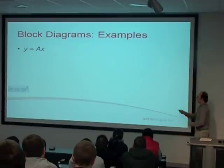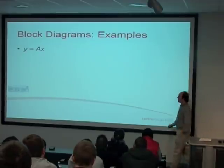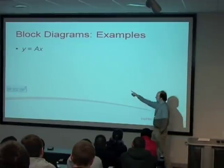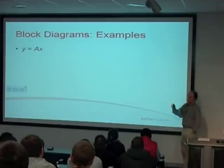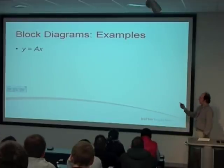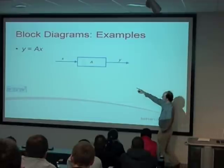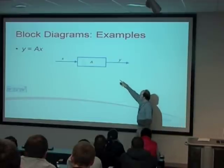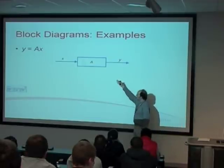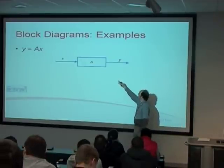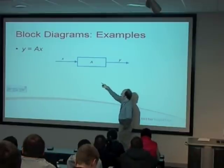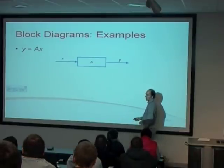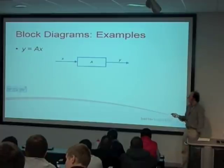Summing junctions can either add two signals together or subtract signals from each other. Those are the three basic elements. Now, if you have a very simple case: y as the output, x as our input, you multiply x by a, you get an output of y. That's represented here: x goes into the block, which in this case is just a as some constant, and you get your output y. So y equals a times x.